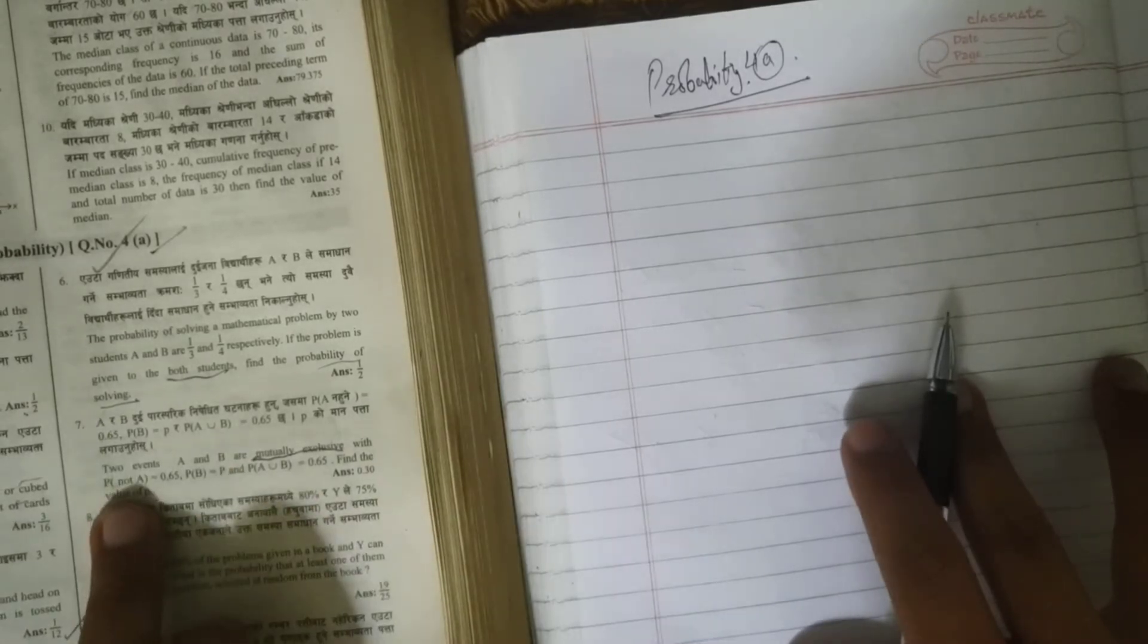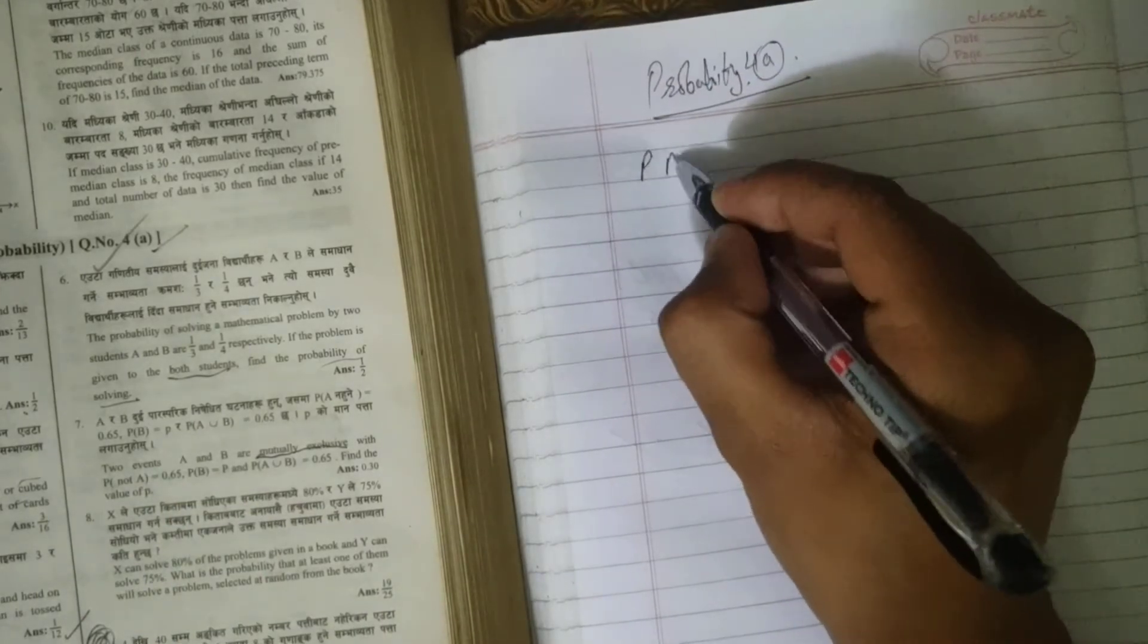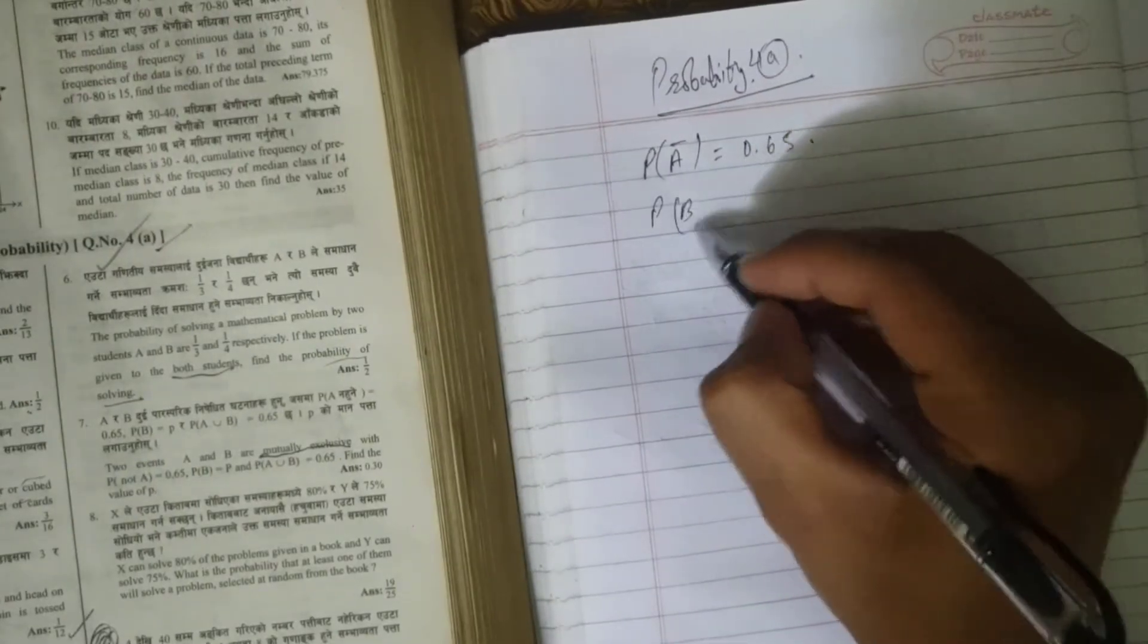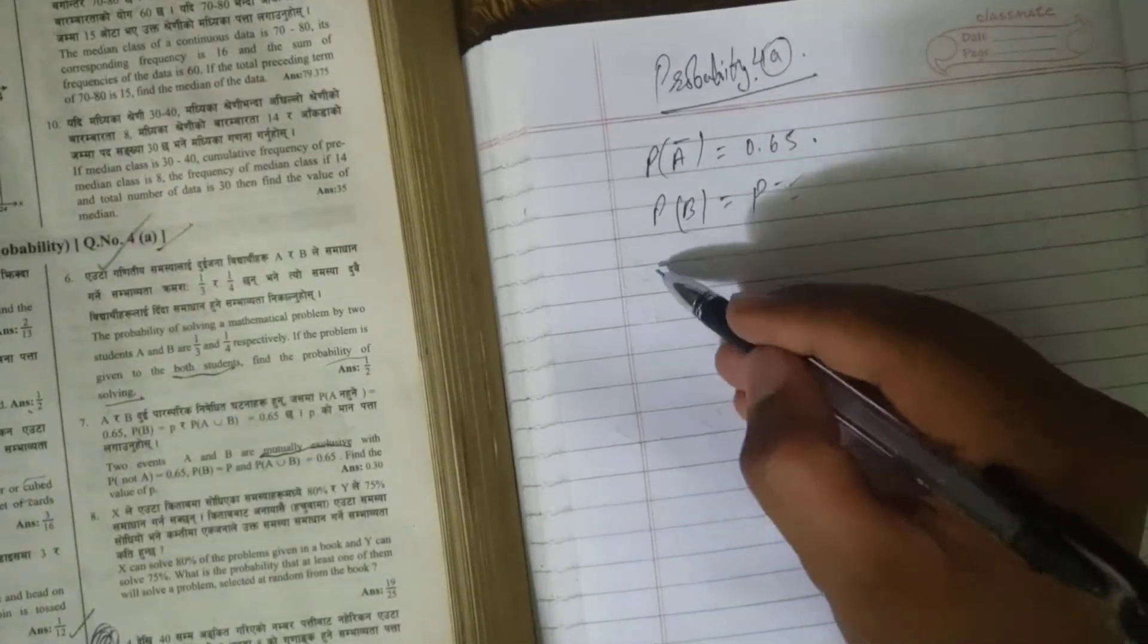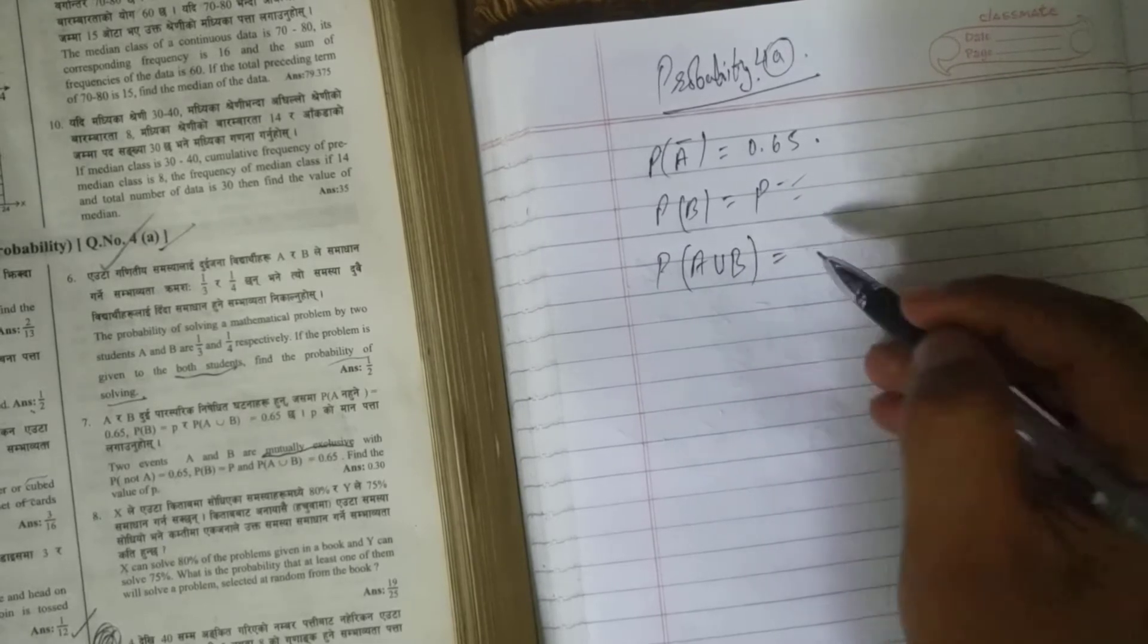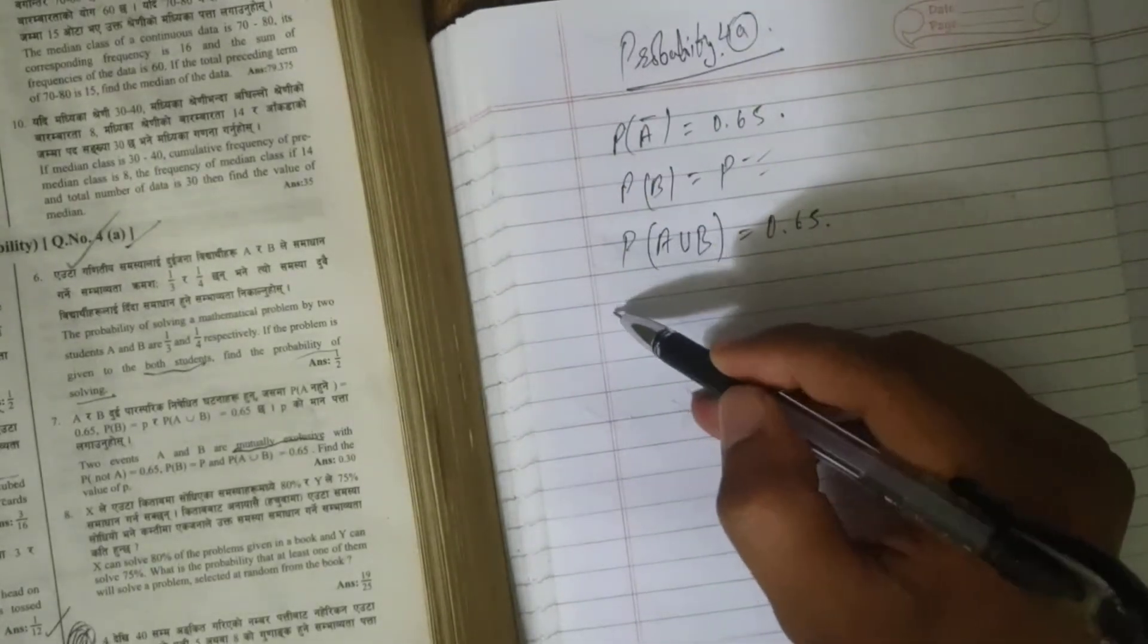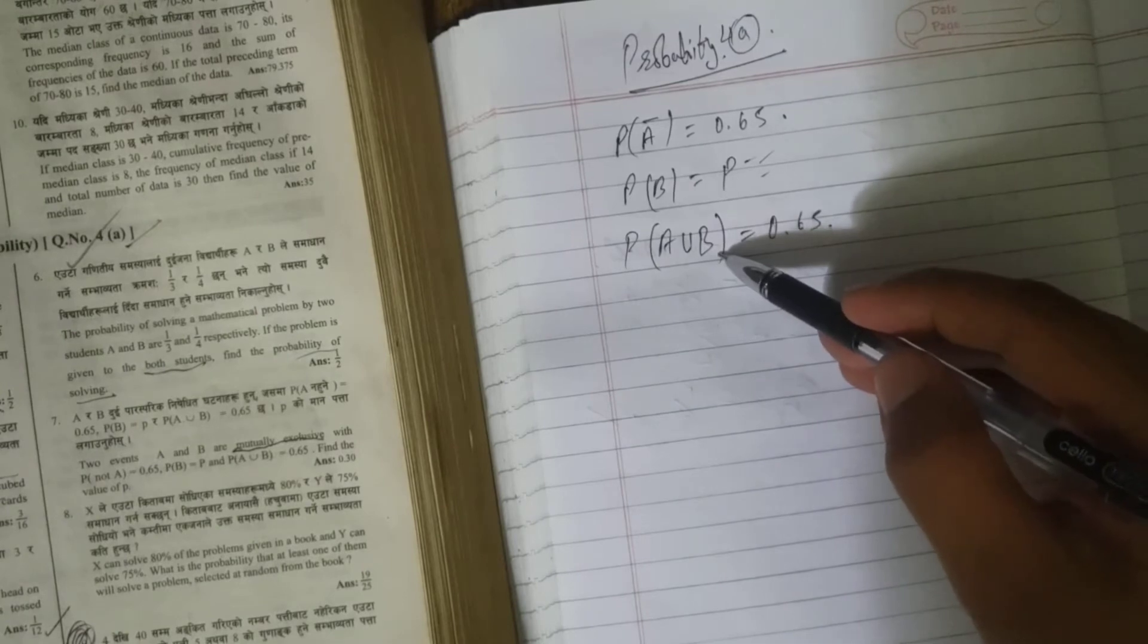The probability of not getting A is 0.65, so P(A̅) = 0.65. Probability of getting B is P, so this is not given, the assumption is P. And then probability of getting either A or B is 0.65. So what we can do is we know this formula.